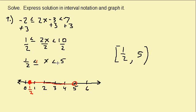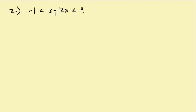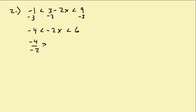Let's solve this next one. We subtract three from all three parts, so we get negative four less than negative 2x less than six. Then we divide everything by negative two, and since we're dividing by a negative number we have to reverse the inequality symbol. We get two greater than x greater than negative three.